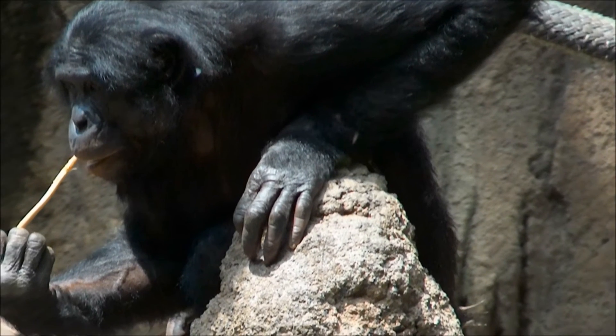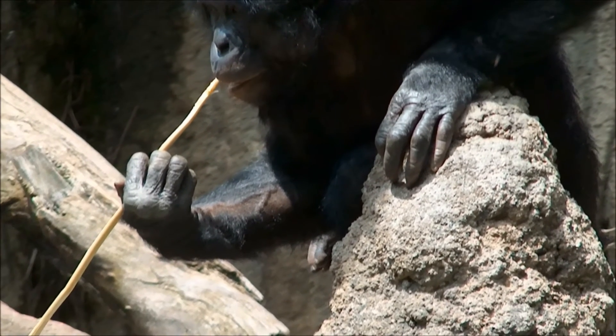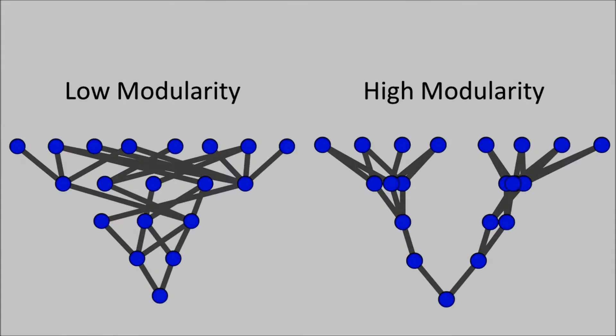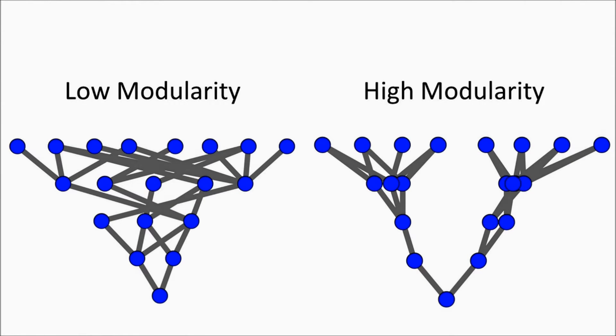So how did humans and animals evolve to learn without catastrophic forgetting? Biological brains exhibit a high degree of modularity, meaning they contain clusters of neurons with high degrees of connectivity within clusters, but low degrees of connectivity between clusters.